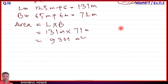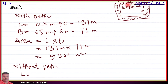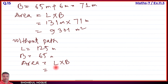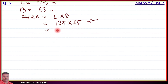Now we calculate the area without path. The length is 125 meter and breadth is 65 meter as given in the question. Area = Length × Breadth = 125 × 65 = 8125 meter square.